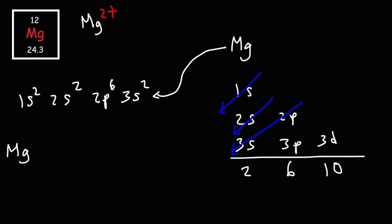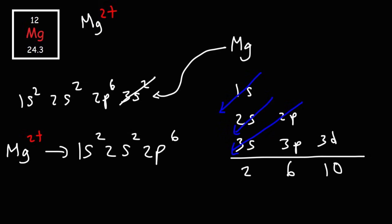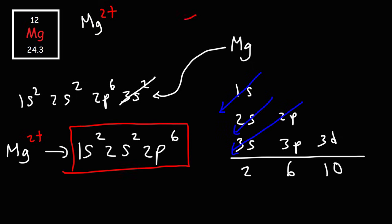So what is the electron configuration of the ion Mg2+? All we need to do is take away 2 electrons from the highest energy level, or the outermost shell, which in this case is the third shell. So we remove those two electrons, giving us a configuration of 1s2, 2s2, 2p6. This is the electron configuration of the Mg2+ ion.